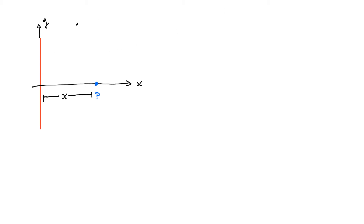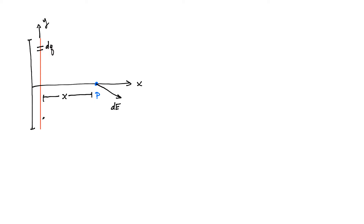Let's start by looking at this system a little bit more closely. We've got our wire here, and we've got our distance x to the point P. Now let's consider a small little bit of charge somewhere on the wire. The magnitude of that charge is dq. This little charge is going to produce an electric field at point P, and it's going to be in this direction, and the magnitude of that field is going to be dE.